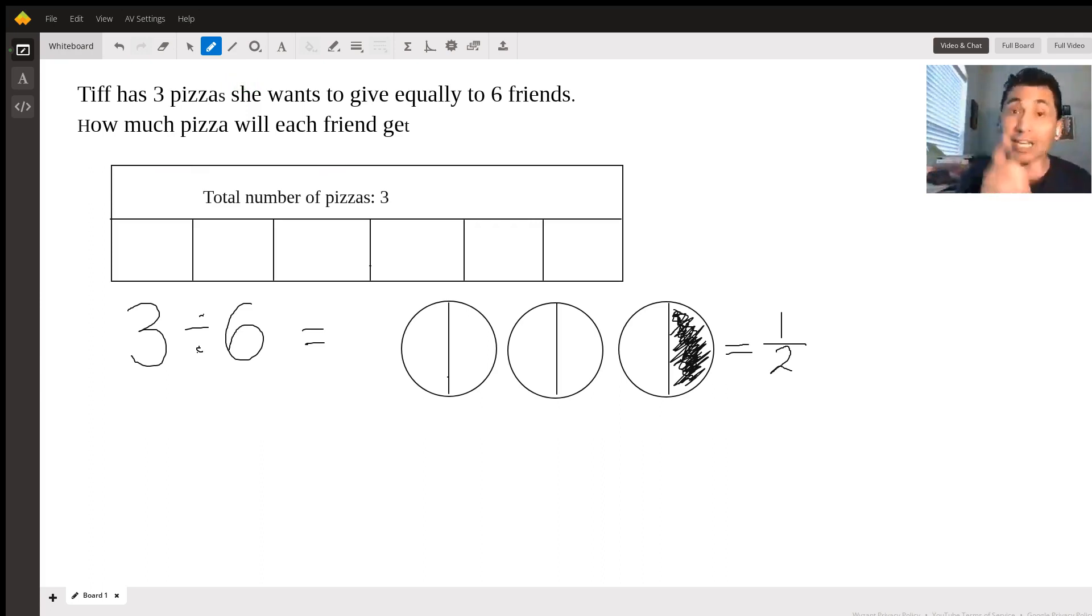In this case, we are talking about 3 pizzas that we want to give equally. Give equally means to divide. So whenever you see the words equally, or share equally, or divide equally, it means that the math operation you're going to do is to divide.